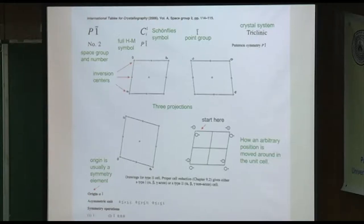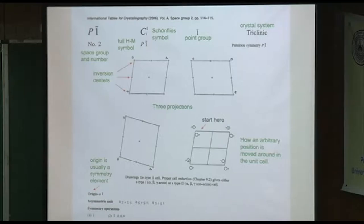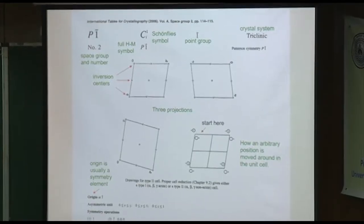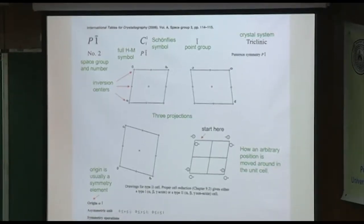The asymmetric unit is smaller — you can count it as between zero and a half in X, zero and one in Y, zero and one in Z. Any questions about this so far? This one's pretty easy. I challenge you to do a cubic one now.